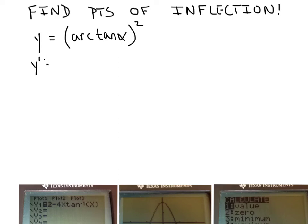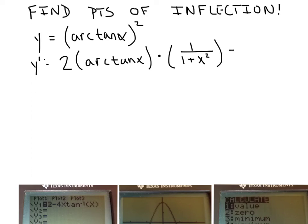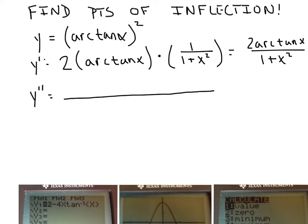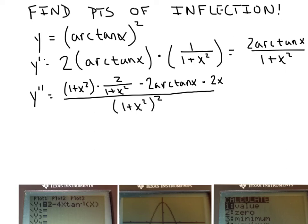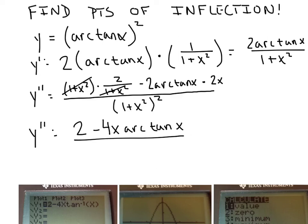My first derivative uses chain rule: 2 times arctan(x) to the first power, multiplied by the derivative of the inside, which is 1 over (1 + x²). So y′ = 2·arctan(x) / (1 + x²). For the second derivative I'll use the quotient rule: low d-high minus high d-low over low squared. Deriving the high gives 2/(1 + x²), and deriving the low gives 2x. After the 2's cancel nicely, the second derivative is (2 − 4x·arctan(x)) / (1 + x²)².